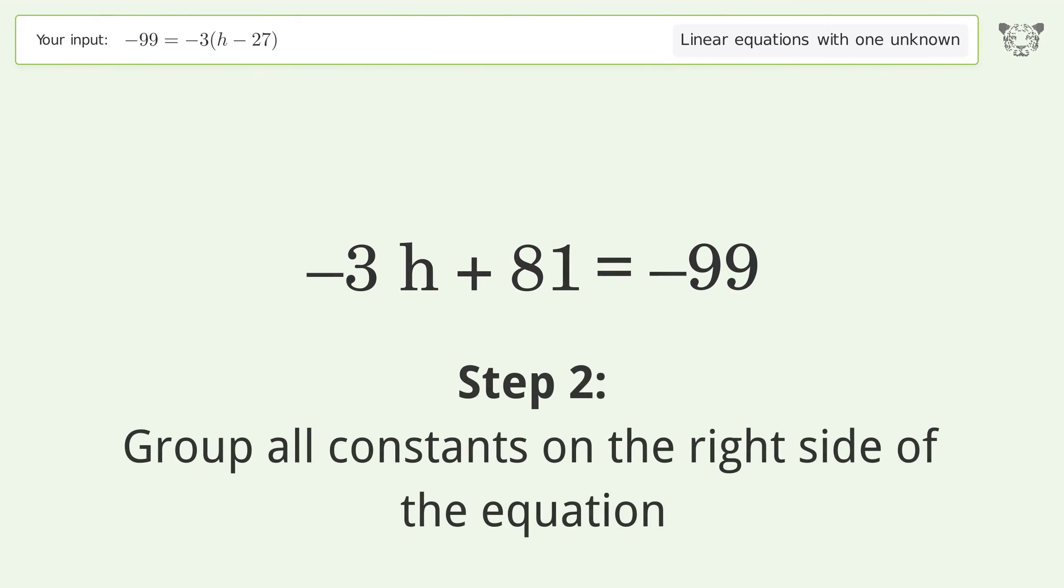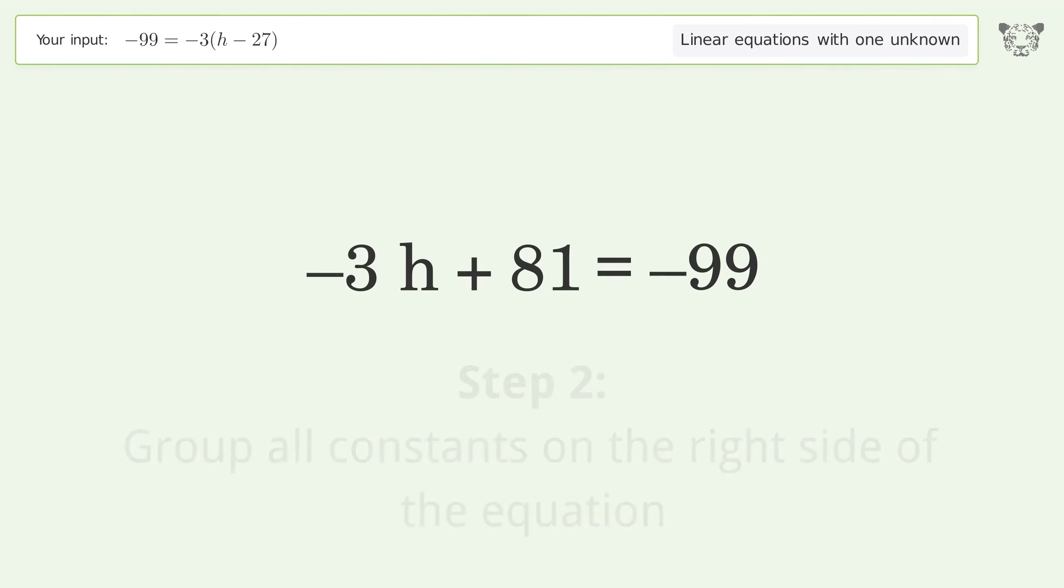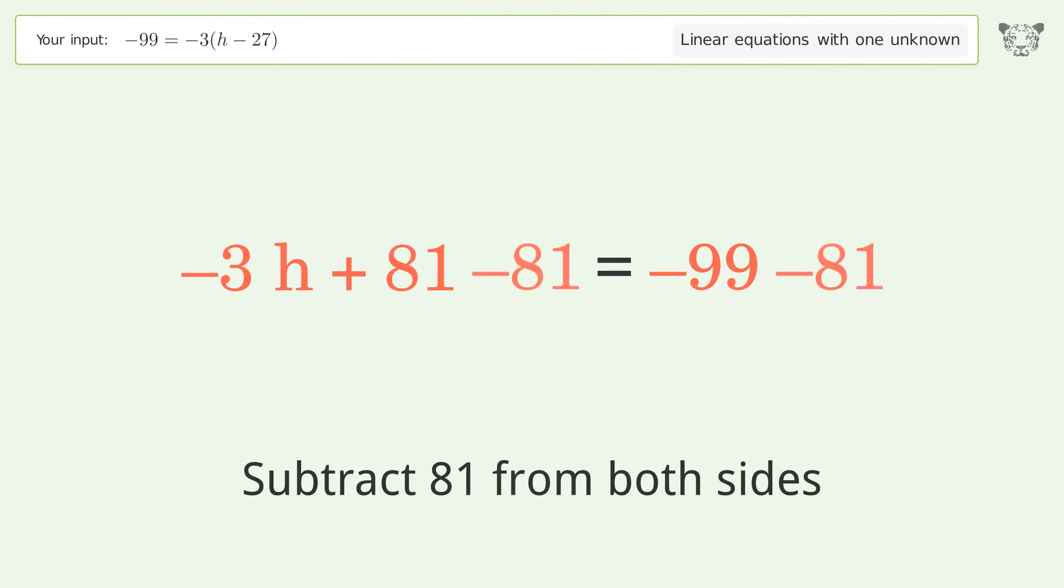Group all constants on the right side of the equation. Subtract 81 from both sides. Simplify the arithmetic.